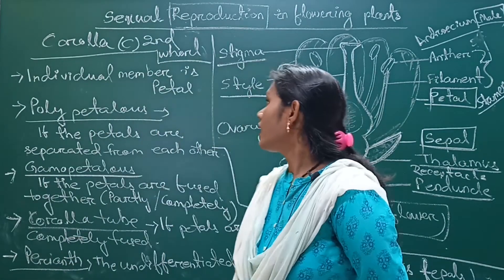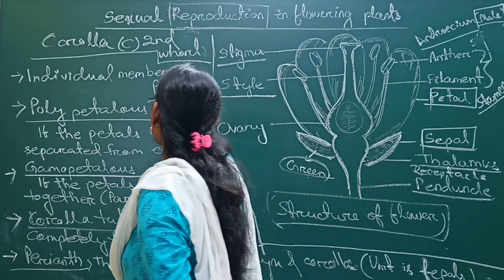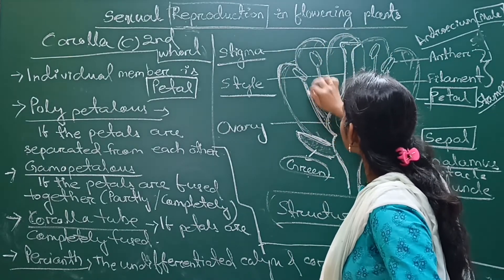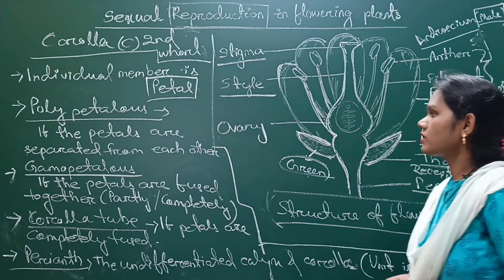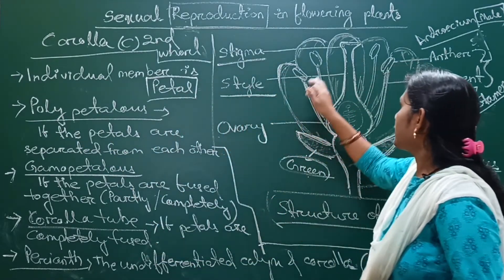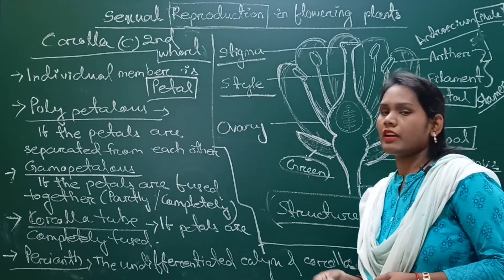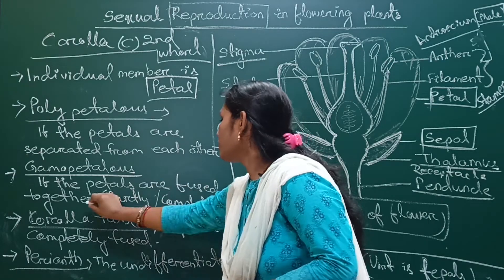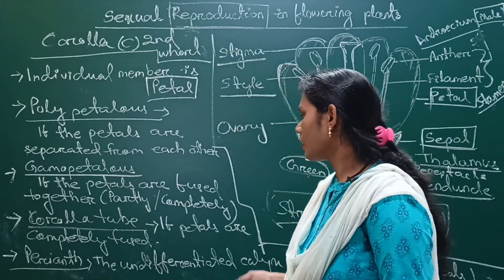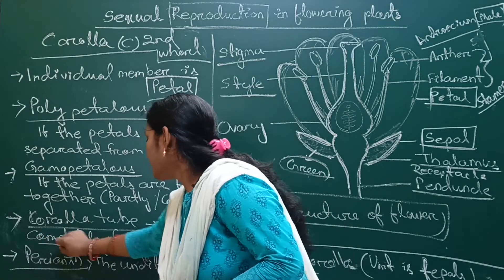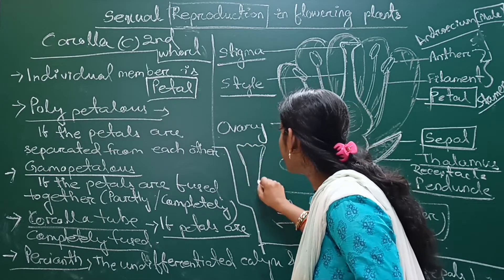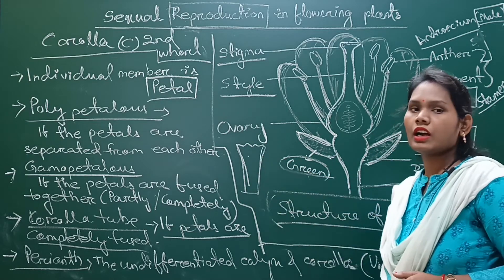Next is the second whorl — the corolla whorl — whose individual member is called petal. A group of petals forms the corolla. If petals are separated from each other, the flower is polypetalous. If petals are fused — either partly or completely — it is called gamopetalous. If petals are completely fused, they form a tube-like structure called the corolla tube.